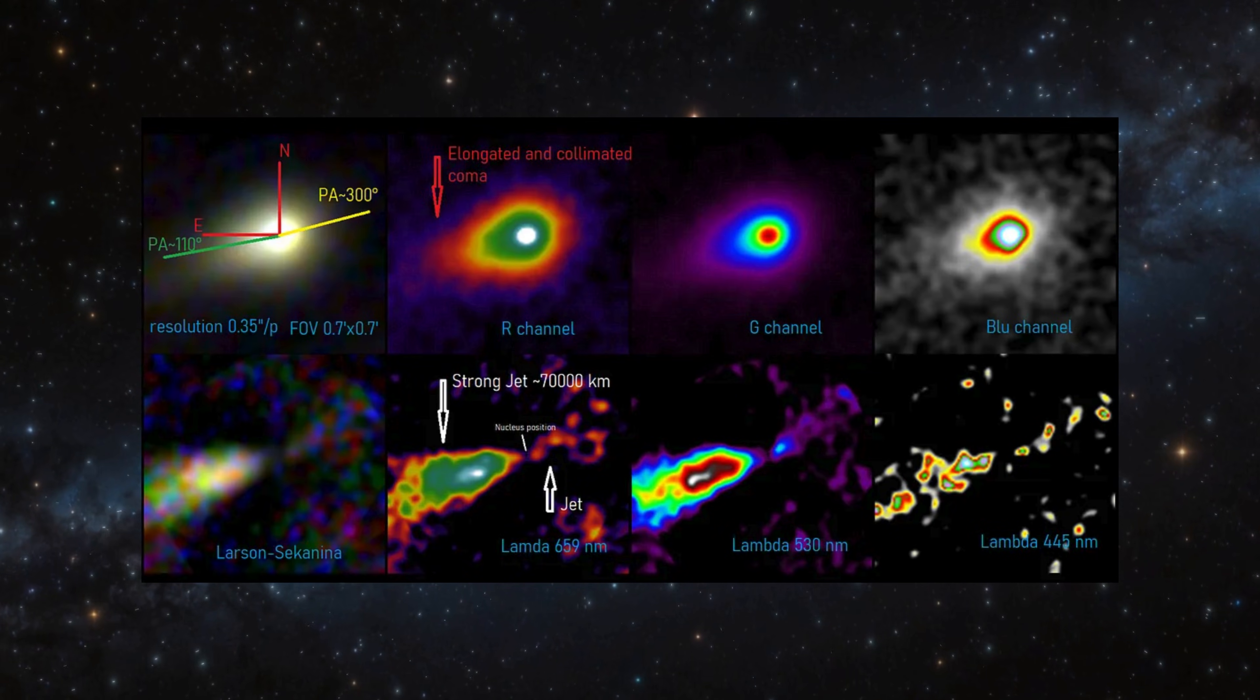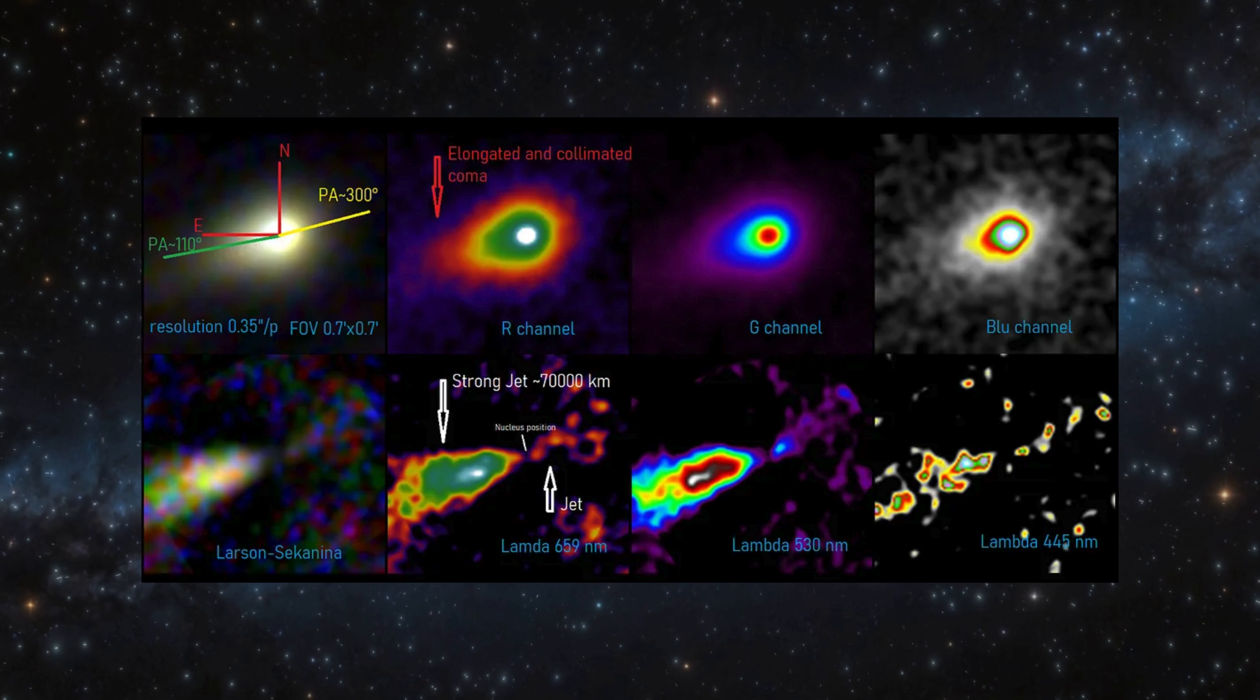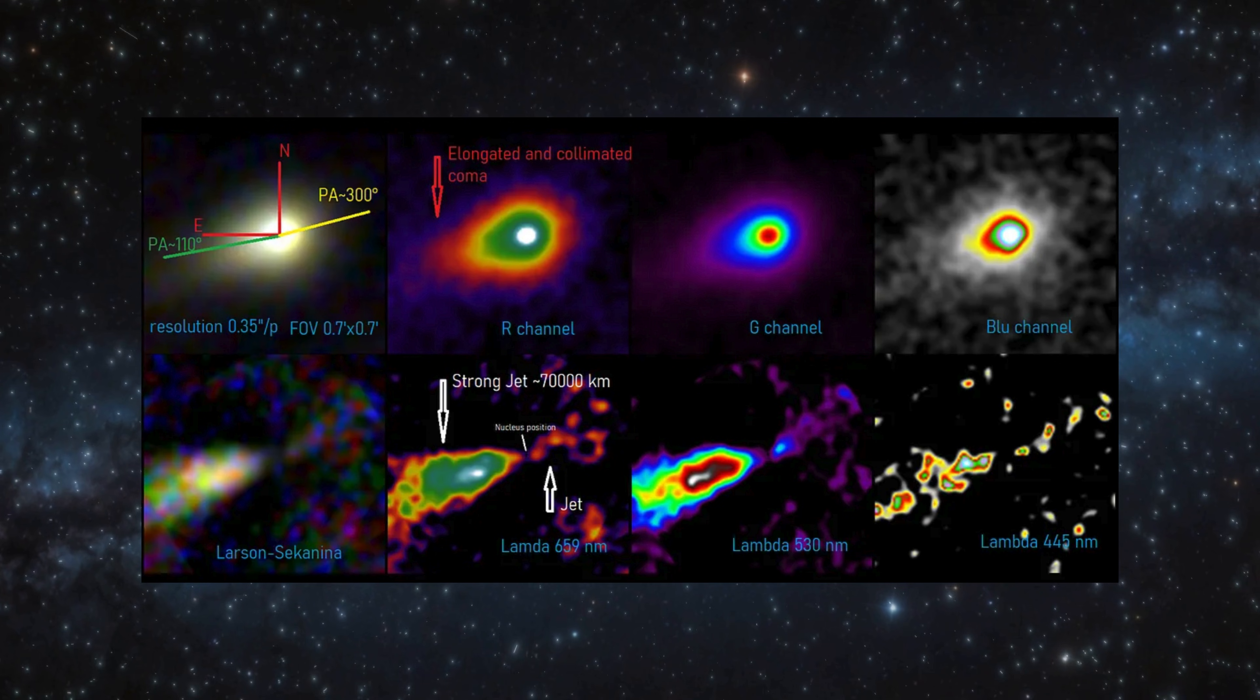At standard comet density, that mass corresponds to a diameter of at least 5 kilometers, which matches the size estimates scientists had been repeating for months. So now we're faced with a direct contradiction.